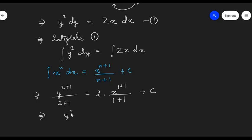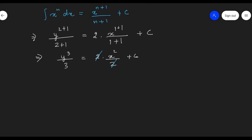So we will get y cubed upon 3 equal to 2 into x squared upon 2 plus c. This 2 in the numerator and 2 in the denominator will cancel each other. So we can write it simply as y cubed upon 3 equal to x squared plus c.